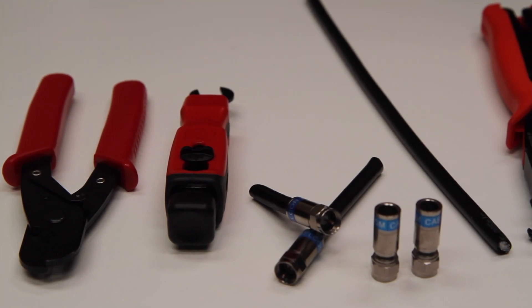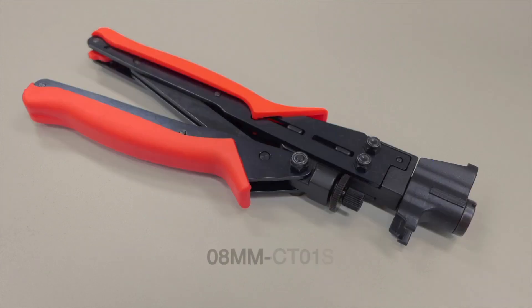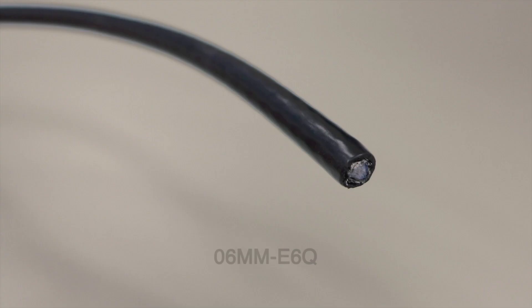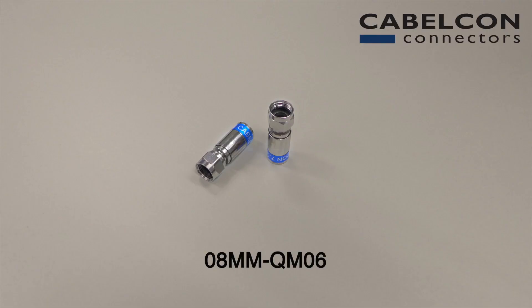The equipment needed to assemble the connector is the coax cable stripper, the compression tool, RG6 cable, cable cutting tool, and of course the connector itself.